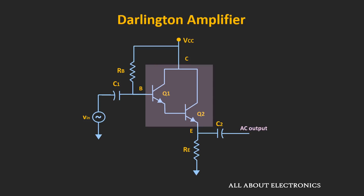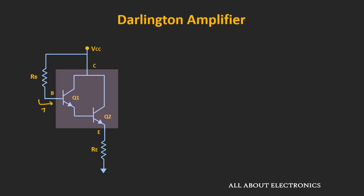First, let's do the DC analysis. For the DC analysis, these coupling capacitors will act as an open circuit. If we see the equivalent circuit, this current is the base current, while this current over here is the collector current. And the current through this emitter resistor is the emitter current.